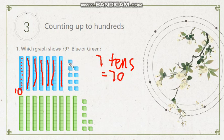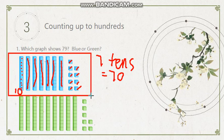Now, let's count on. 71, 72, 73, 74, 75, 76, 77, 78, 79. So I got 79. So that's our answer. The blue one. The blue graph shows 79.